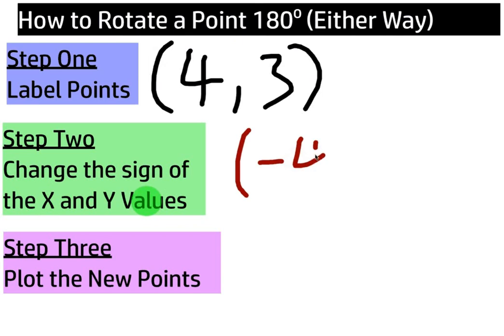So the 4 is going to become negative 4 and the 3 is going to become negative 3. Again, if these values were already negative, then we'd make them both positive. So this is actually our new point.